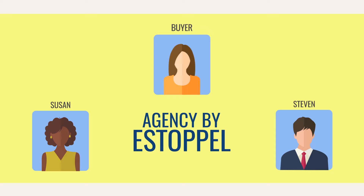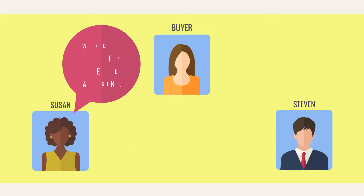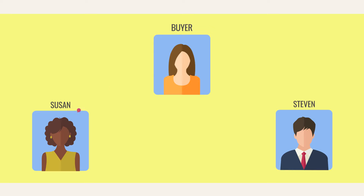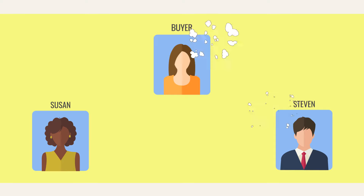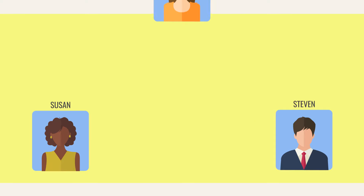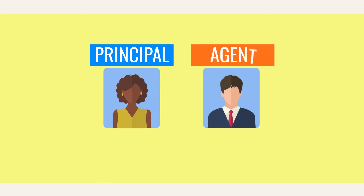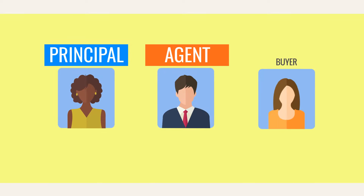Estoppel is a legal principle which says that a person cannot go back on something they previously said. In this case, it means that Susan can't allow a buyer to think that Steven is her agent and then later deny that it happened. Said the other way, an agency by Estoppel is created when a principal doesn't stop an agent from going beyond the agent's normal duties, thus giving someone else the impression that there is an agency relationship.